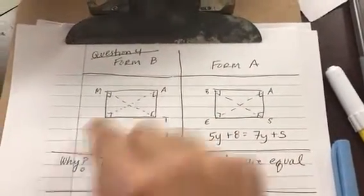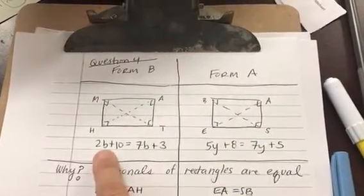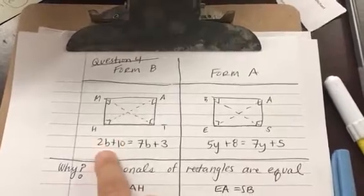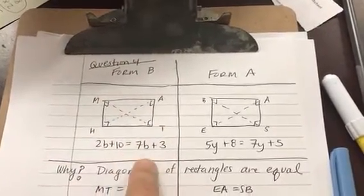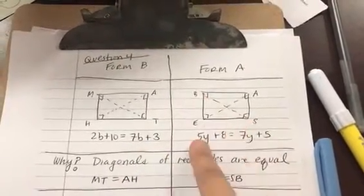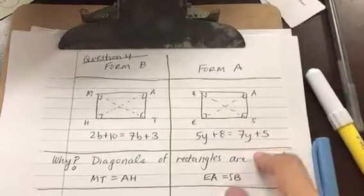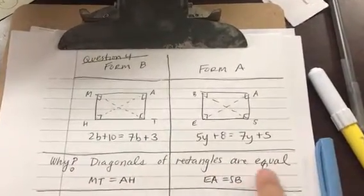They both are telling us that the diagonal H-A is one expression, and diagonal M-T is one expression. Same with this. One diagonal B-S is this expression, E-A is this expression. Why can we set this up like this? Diagonals of rectangles are equal. That's just the way it goes.